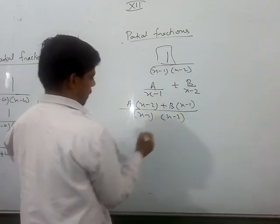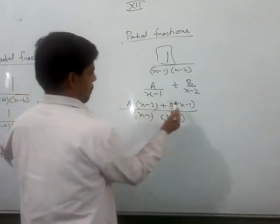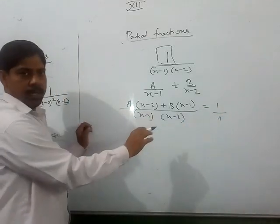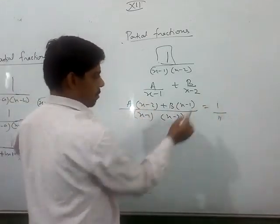This is what you get, right? Now, you want to find A and B. This must be equal to 1 upon this. So the denominator is same, no problem. Numerator is equal to 1.